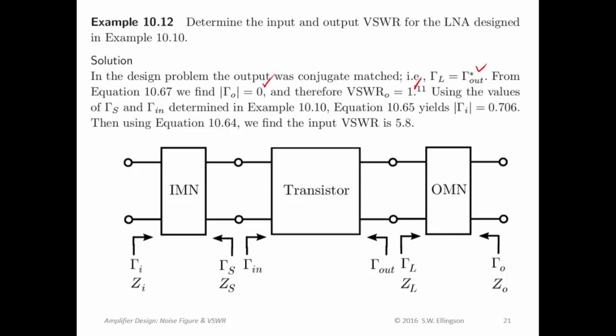Using values of gamma sub s and gamma sub in, we find that gamma sub i, its magnitude is 0.706 using the equations I just showed you. And then we get that the VSWR is 5.8.